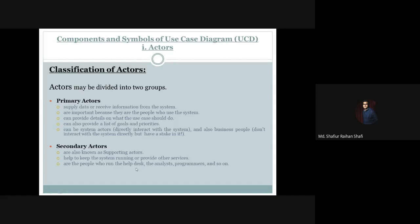Secondary actors are the people who run the help desk, the analysts, the programmers, and so on. Broadly, actors in a use case diagram can be divided into two groups: primary actors and secondary actors. Additionally, other types of actors can appear in use case diagrams, such as hardware devices and external systems, which can also be considered as actors.